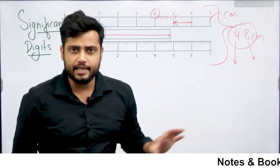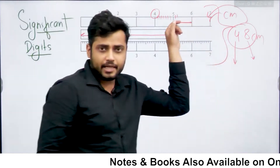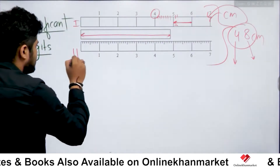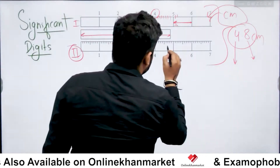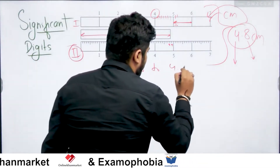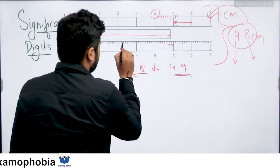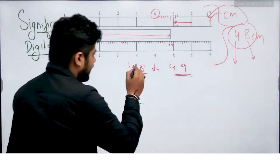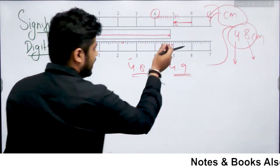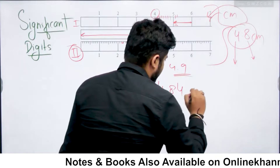Isse zyada better hum is measured value ko nahi likh sakti. Yeh limitation hai is scale ki. To measured value yeh depend karti hai ke hamare scale ki accuracy kya hai. Agar same hi length hum is dusre wale scale se naapenge — yeh pehla scale, yeh doosra scale. Same value mein second scale par naapun to yahan par mujhe dikhta hai 4, aur yeh 8th division hai, yeh 9th division hai, so yeh value 4.8 se 4.9 ke beech mein hai. Is scale se aap jo sabse chhoti length measure kar sakti ho woh 1 mm ki hai. Toh 4.8 to pakka hai, aur baqi 0.8 aur 0.9 ke beech mein scale ki length kahi lie kar rahi hai. Usko bhi again same cheez karenge, eye estimation se do parts mein divide kar denge. Suppose isko humne likha hai 4.84 centimeter.